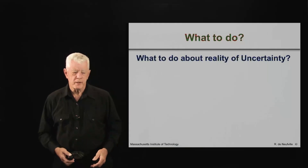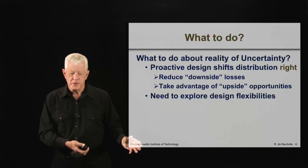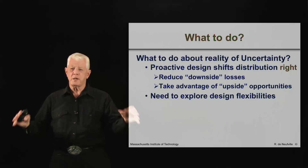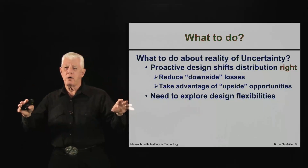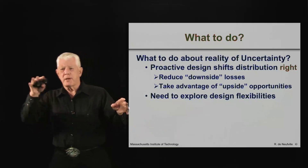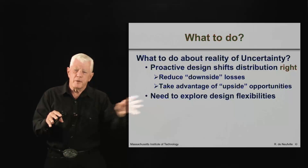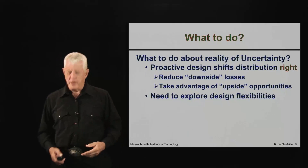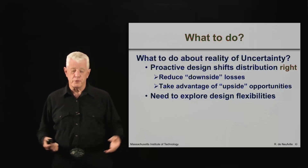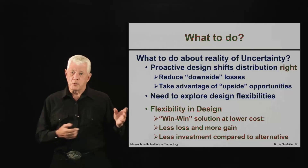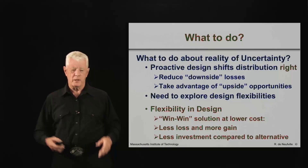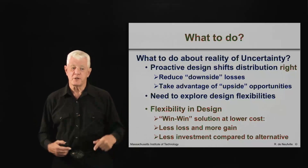So what do we then do? The proactive design shifts the distribution to the right. If you had your base case design, you have gone through things which shift the distribution towards the positive side, both by cutting the downside tail and by extending the upside tail. You do that by exploring the various ranges of possible flexibilities that might help. We want to end up with the win-win solution at lower cost: less loss, more gain, less investment compared to the alternatives, at least at the start.